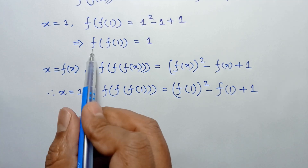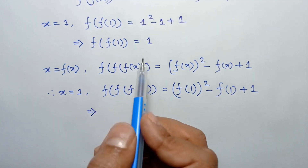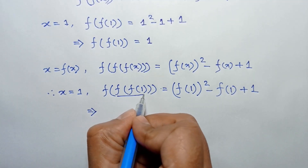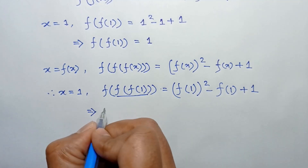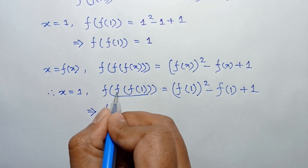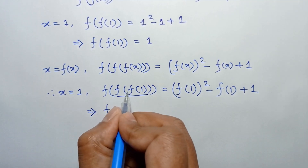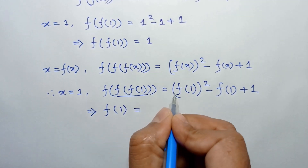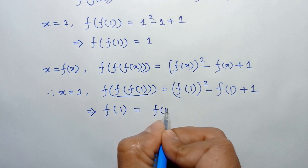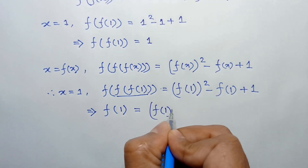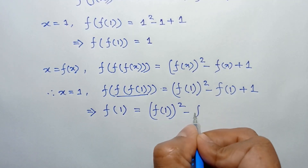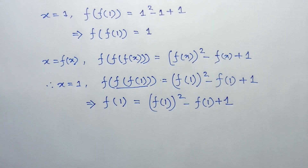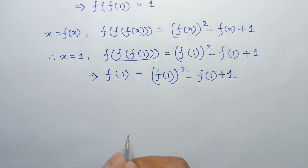The value of f(f(1)) is one, so substituting this as one, we will have f(1) equal to f(1) squared minus f(1) plus one.